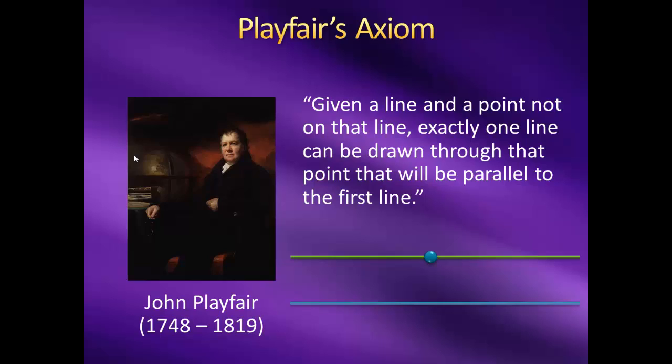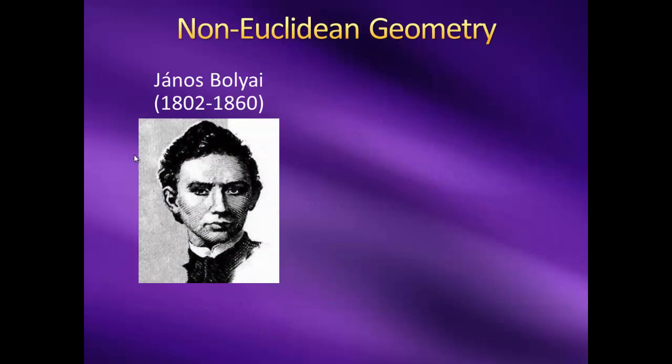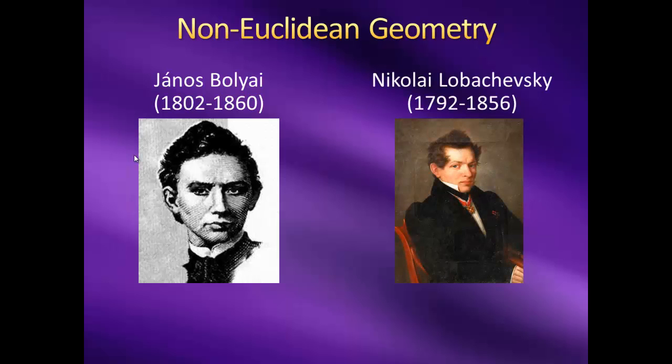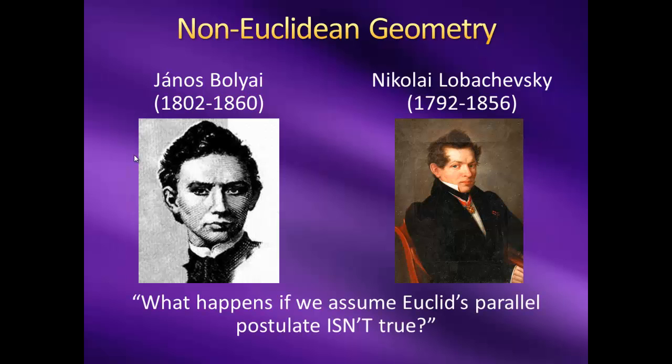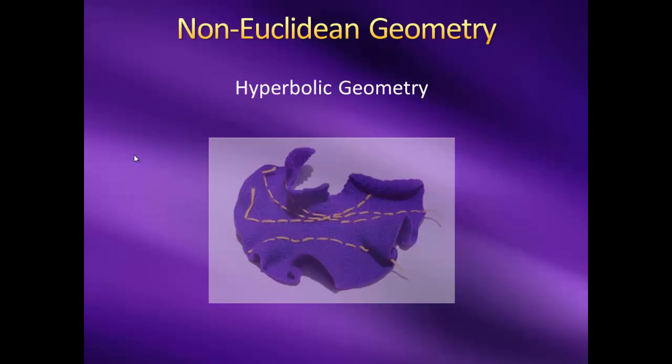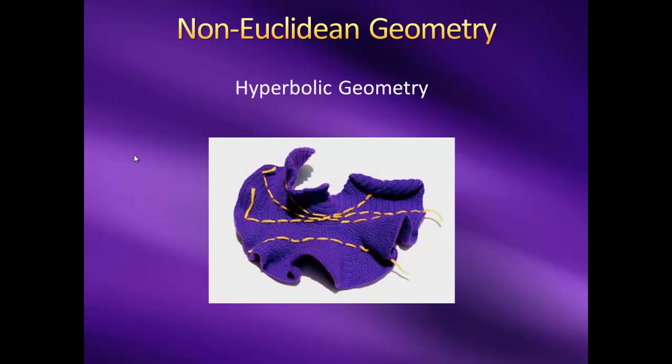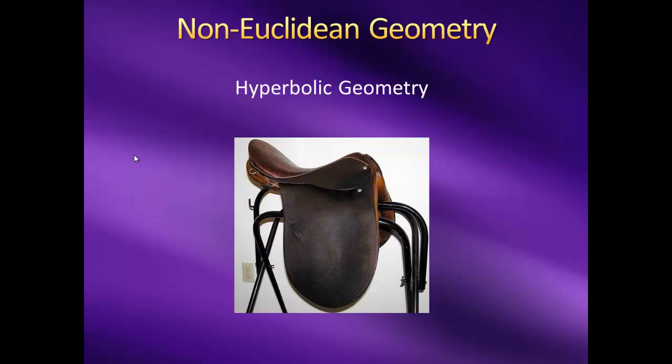Anyway, after years of trial and failure, two mathematicians, a Hungarian named Yanis Boliai and a Russian named Nikolai Lubachevsky, began to think in a different way. They thought, what happens if we assume that Euclid's Parallel Postulate isn't true? Can we create a consistent geometry if we assume something different instead? And the answer was, yes. Boliai and Lubachevsky ended up discovering a new kind of geometry, a non-Euclidean geometry, called hyperbolic geometry, in which a line could have an infinite number of lines parallel to it that all go through the same point. This works because hyperbolic geometry can be thought of as taking place on a surface much like the shape of a Pringles chip, a horse saddle, or even a coral reef.